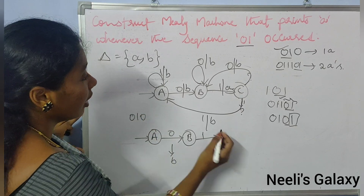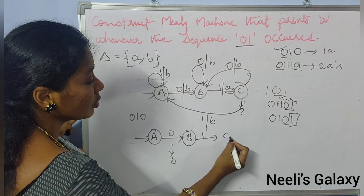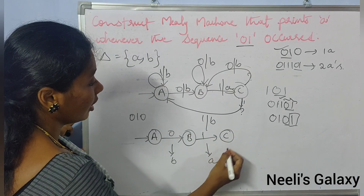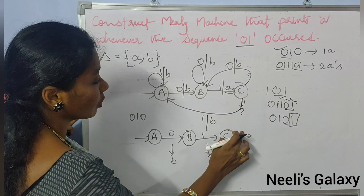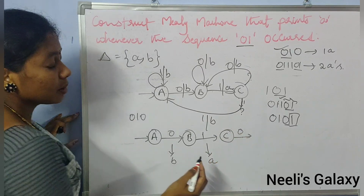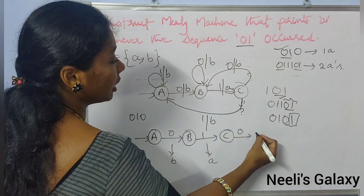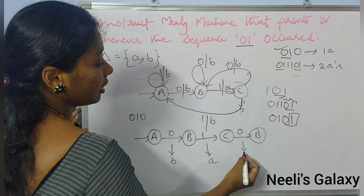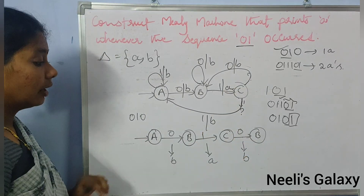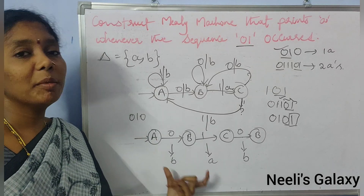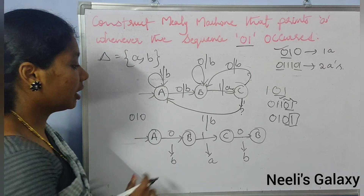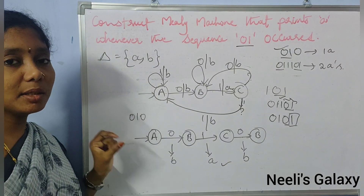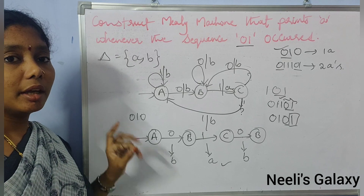The next alphabet is 1. With state B and input 1, it goes to state C, and here the output is A. The next alphabet is 0. With state C and input 0, it goes to state B, and the output is B. So collect all the outputs and count how many A's there are. The output has only 1A, which indicates there is only 1 occurrence of the sequence 0-1 in the given string.